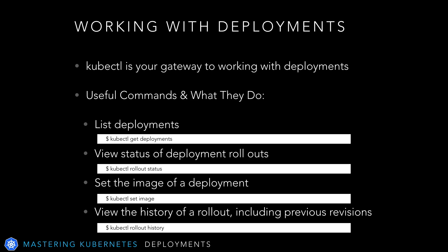Working with deployments is equally simple as many other things using kubectl. kubectl is your gateway to working with deployments. You can list deployments using the kubectl get deployments command. You can view the status of deployment rollouts using the kubectl rollout status command. You can set the image of a deployment using the kubectl set image command. And you can view the history of a rollout, including previous versions to roll back to, using the kubectl rollout history command.